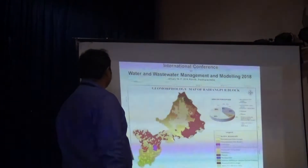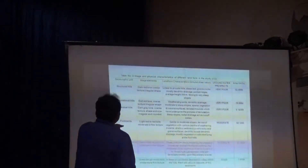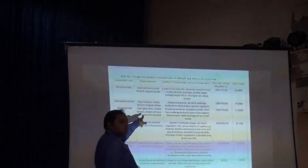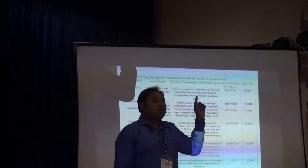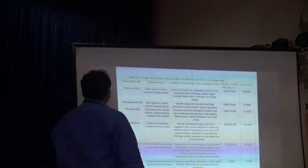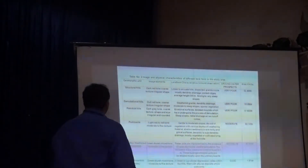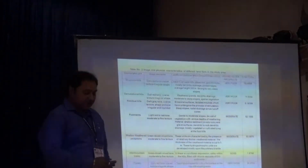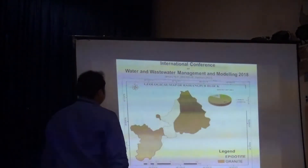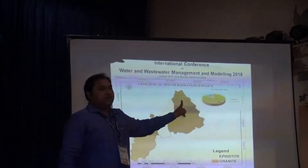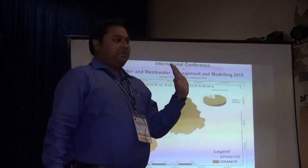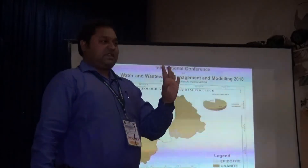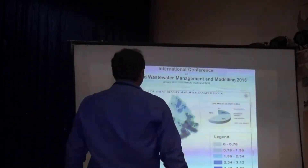This is the geomorphology map. Using image interpretation we identify different geomorphological features such as structural hills, denudational hills, pediplanes, pediments, plateaus, and others. Most of the area consists of granite and epidiorite. In granite rock, groundwater storage is a major problem due to its parent rock nature.